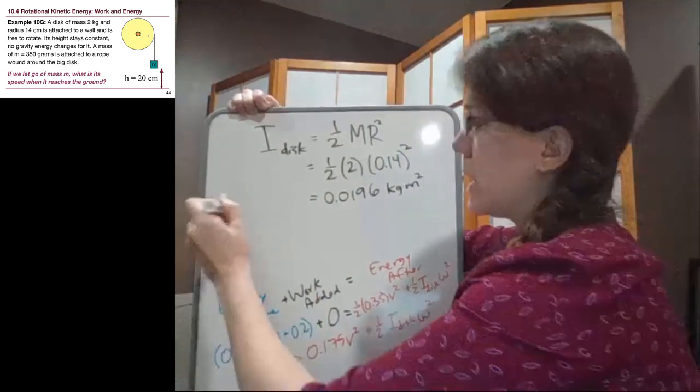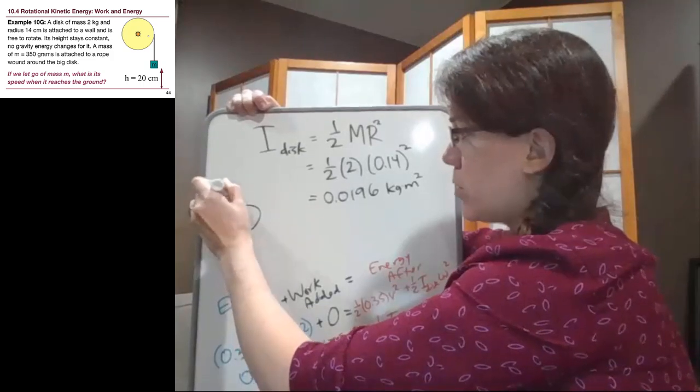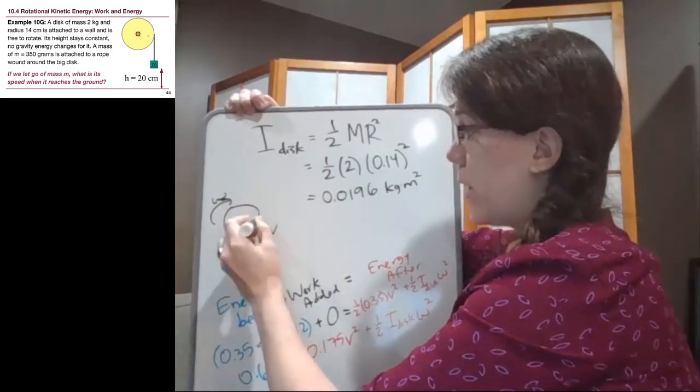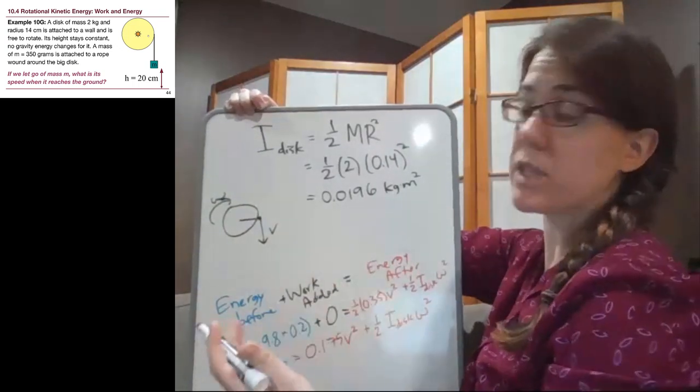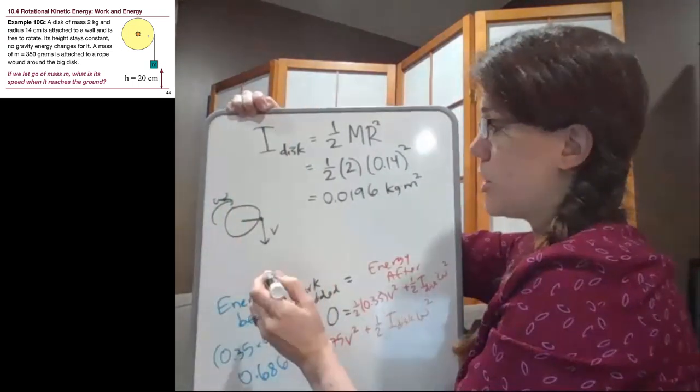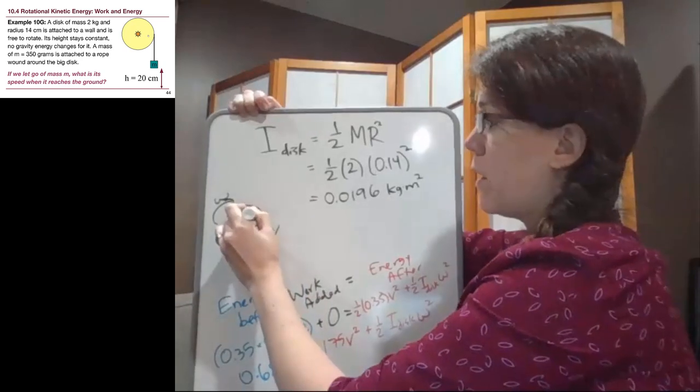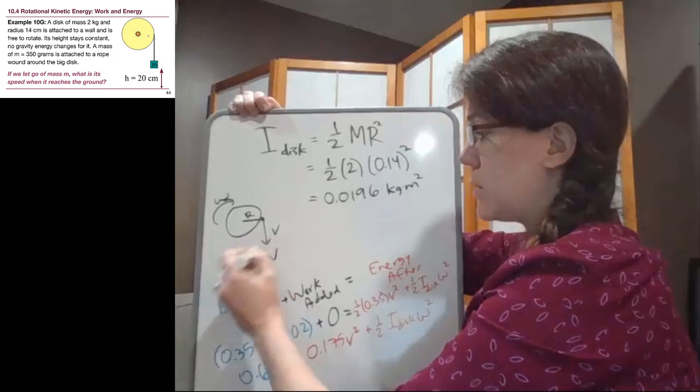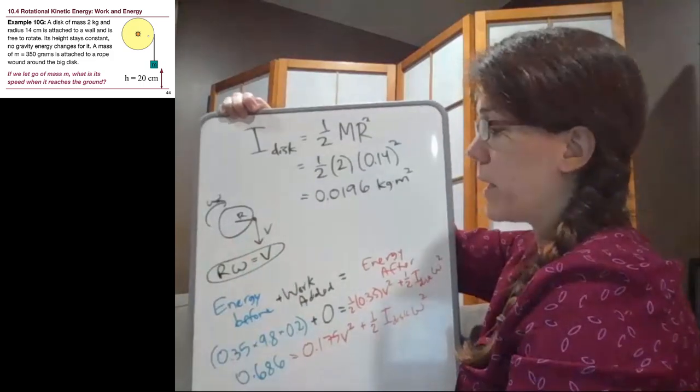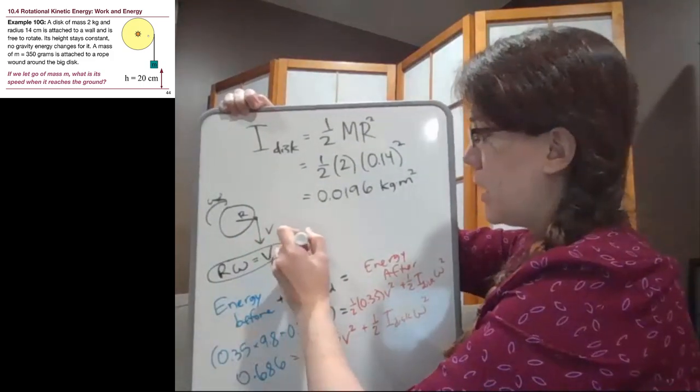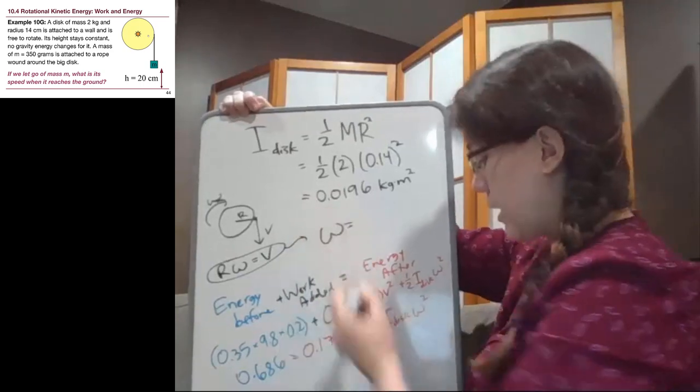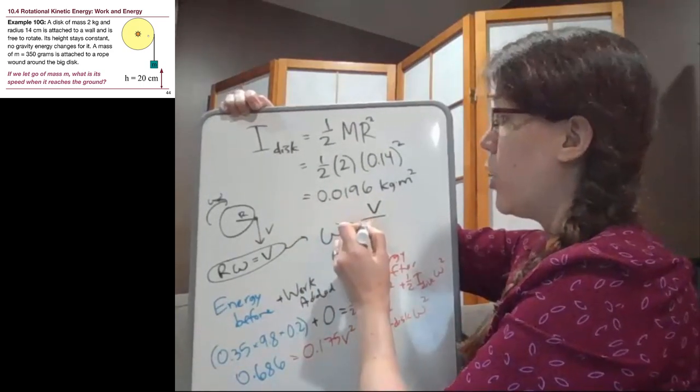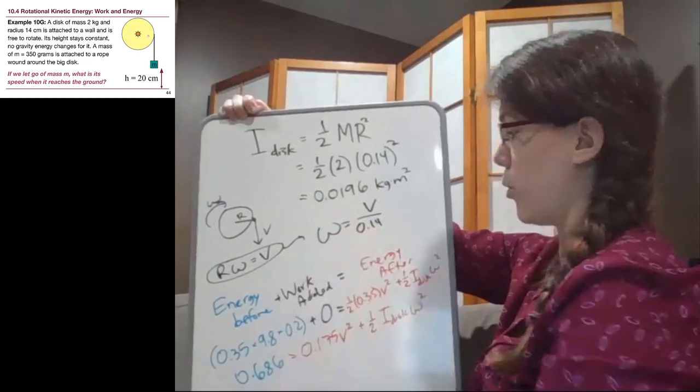And then separately, in this situation where we are rotating, and that part of the disk, the edge of the disk, is moving tangentially with the speed v, those two things are related by the radius of the disk. Our omega equals v over r, and so we can rewrite that unknown omega in terms of the v that we're looking for over the radius 0.14.